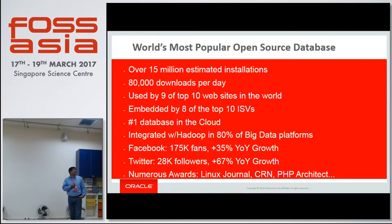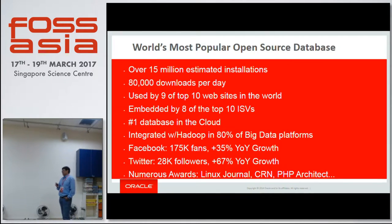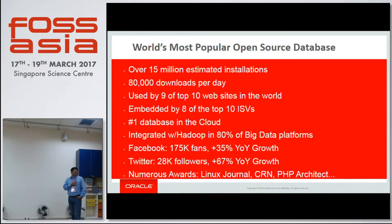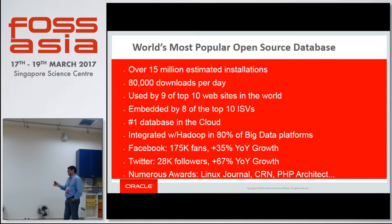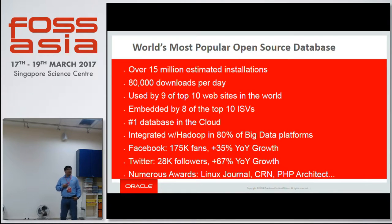Why do we call it so popular? 15 million installations, 80,000 downloads per day. When I tell my engineers they made a mistake, it's going to be known to 80,000 people every day — so they have to be very, very careful. Top ISPs use it. It's the number one database on the cloud. We have offered MyScale on the cloud very recently, and it's on AWS, Microsoft, Google Cloud — all kinds of clouds — and people are using it quite a bit.